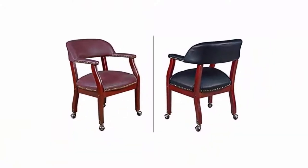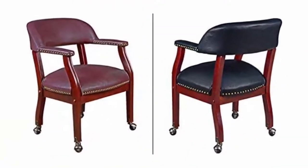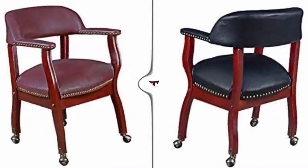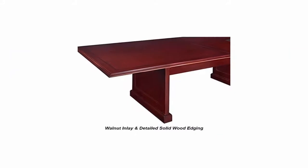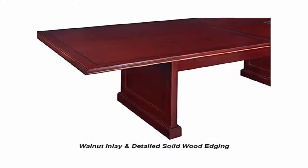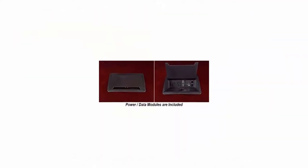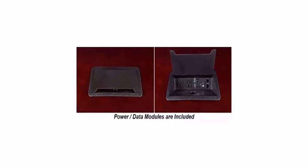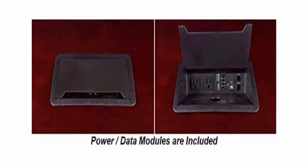Description: Luxurious Conference Table with Chairs Set. Table is Made from Solid Wood and Hardwood Veneers in a Rich Mahogany Finish. Wood Surfaces are Protected with High-Tech Catalyzed Lacquer for Scratch-Resistant Surfaces. Conference Table Features Detailed Solid Wood Edging and Walnut Inlay on the Conference Table Top. Power/Data Modules are Included in all Conference Tables at No Additional Charge.